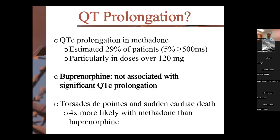QT prolongation is not really a concern with buprenorphine. When we look at methadone, there's a risk of 29% — mostly when doses are over 120 milligrams. Cardiac death from torsades is four times more likely with methadone than buprenorphine. So if you've got cardiac issues that you're concerned about, this may be another good medication to consider.